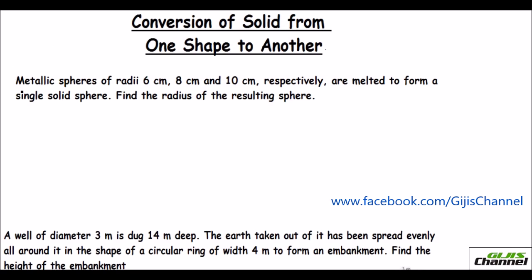Here we have the first question: metallic spheres of radii 6 centimeters, 8 centimeters, and 10 centimeters respectively are melted to form a single solid sphere. Find the radius of the resulting sphere. So you have three metallic spheres of different radii — 6 cm, 8 cm, and 10 cm — melted to form one new bigger sphere. We need to find the radius of that resulting sphere.